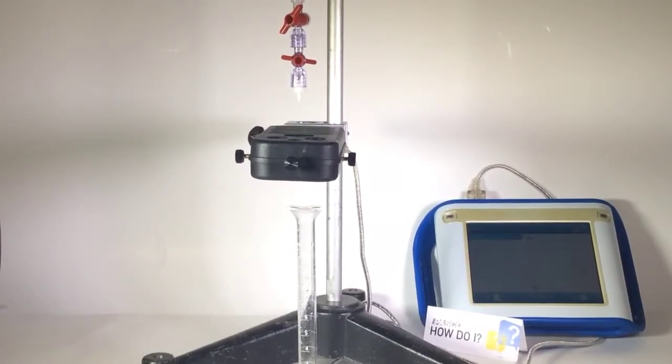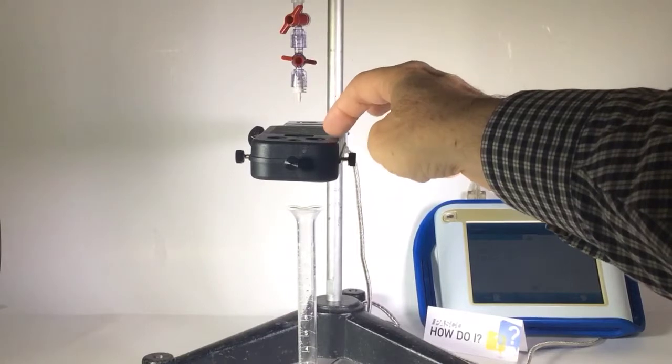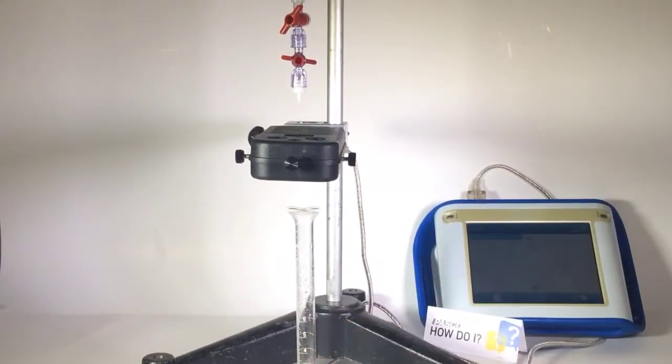How do I calibrate a Pasco drop counter? To do this I have already set up the drop counter so that the syringe drops through the drop counter and into a graduated cylinder.